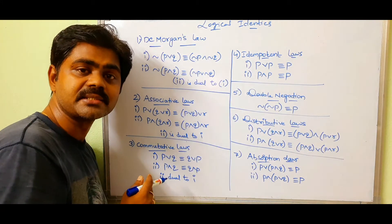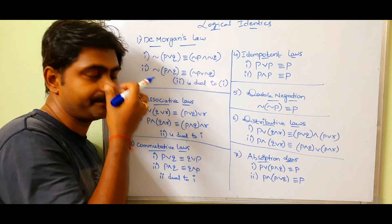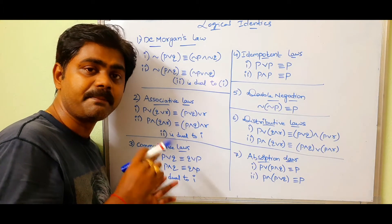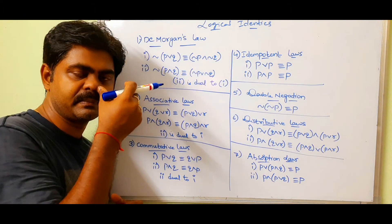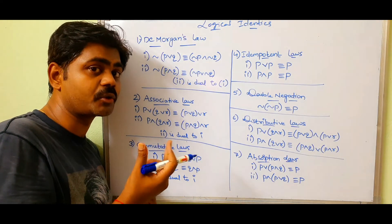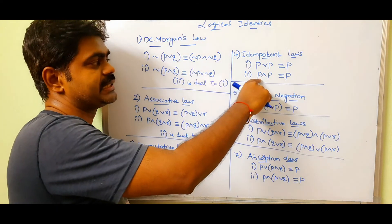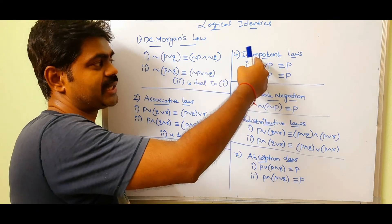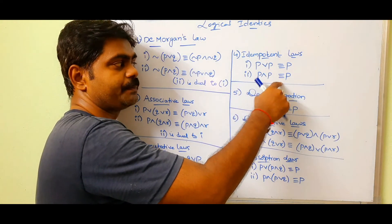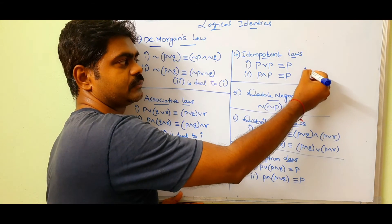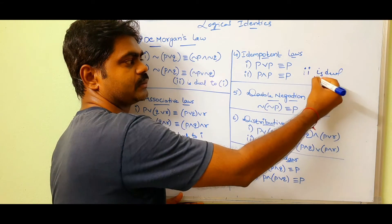Next, idempotent law. P OR P equals P — for example, true OR true equals true. So in the dual, OR is changed to AND: P AND P equals P. So formula 2 is dual to formula 1.